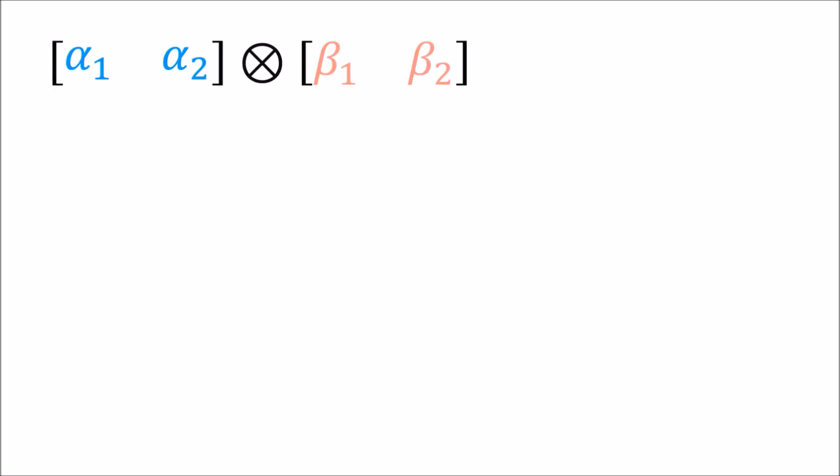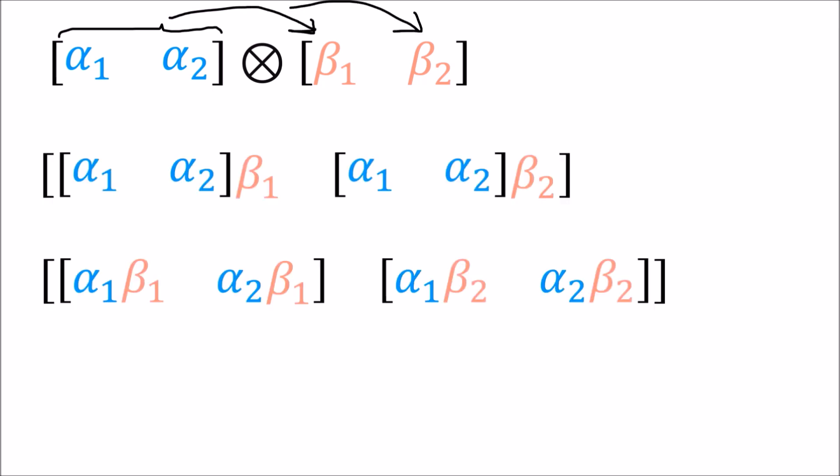The last benefit is the array shape. For linear maps we used a column vector on the left and a row vector on the right. For bilinear forms, since we're dealing with covector-covector pairs, we use two row vectors instead. We distribute the array on the left to every element of the array on the right, and we end up with a row of rows.